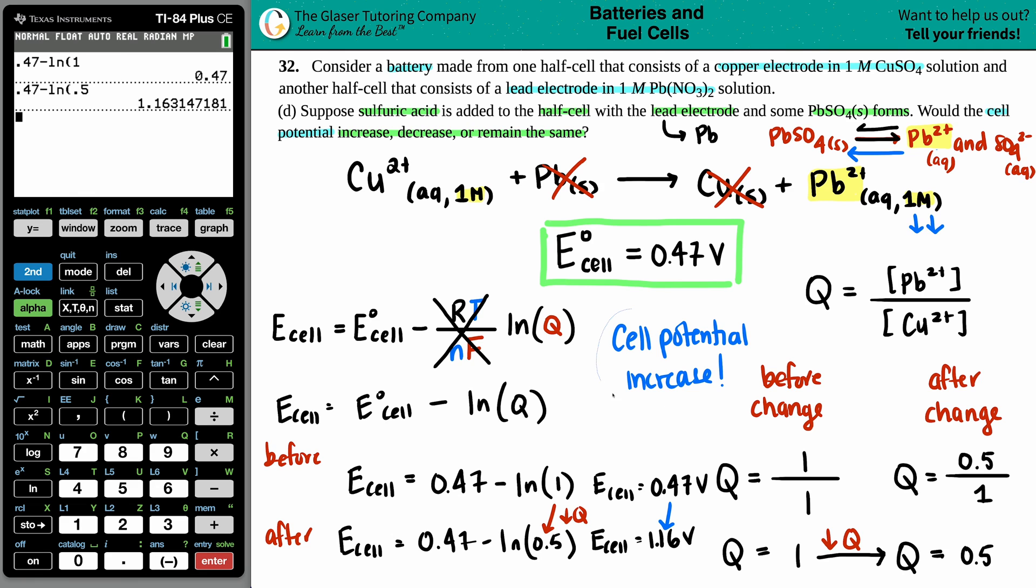So we can know the generality now that if you always drop a Q value, your cell potential will always increase and vice versa. If you increase the Q value, you will drop the cell potential. So they are inversely related.